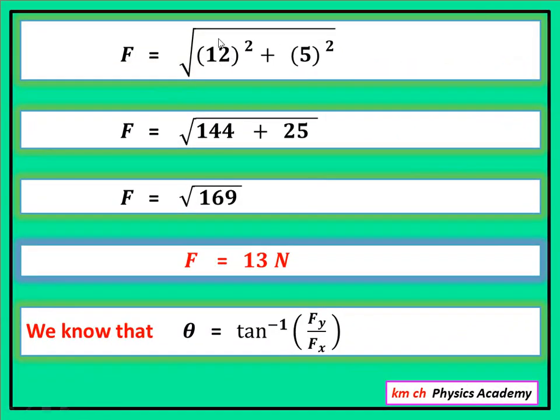F is equal to square root of 12 square plus 5 square. 12 کا square 144 ہو جائے گا, 5 کا square 25 ہو جائے گا۔ 144 اور 25 کو add کریں گے تو 169 ہو جائے گا اور 169 کا square root لیں گے تو یہ 13 Newton آ جائے گا۔